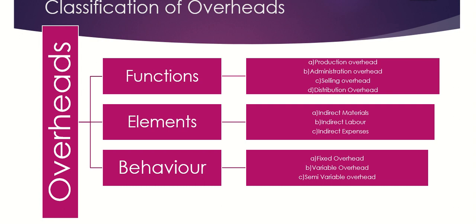Third is indirect expenses. Expenses which cannot be allocated but must be apportioned to different cost centers are termed indirect expenses. Examples include power, depreciation, insurance, taxes, and rents and rates.